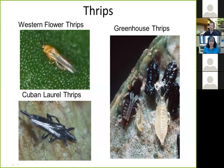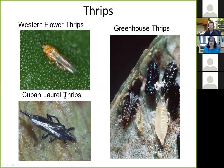The most common thrips attacking crops in U.S. greenhouses, high tunnels, and many field crops is the western flower thrips — very common and very aggressive. The life cycle I described is based on this species. On occasion you might find greenhouse thrips, which are very rare. And those producing tropical plants might encounter Cuban laurel thrips. But by far, the western flower thrips is the most common.